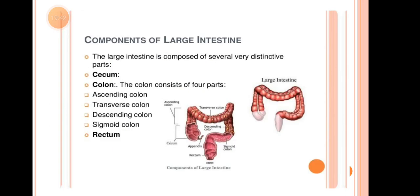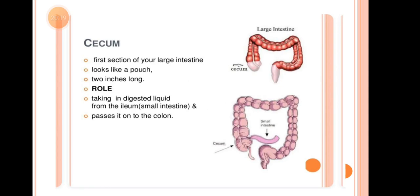Now, the Large Intestine. Its components are: Cecum, Colon, and Rectum. The colon consists of four parts: ascending colon, transverse colon, descending colon, and sigmoid colon. The cecum is the first section of the large intestine, shaped like a pouch, about 2 inches long. Its role is to receive digested liquid from the ileum and pass it on to the colon.